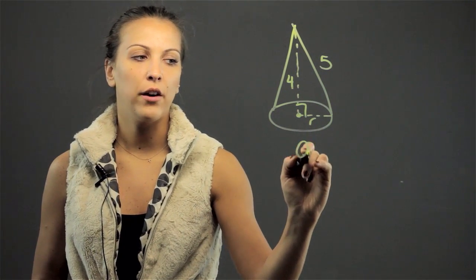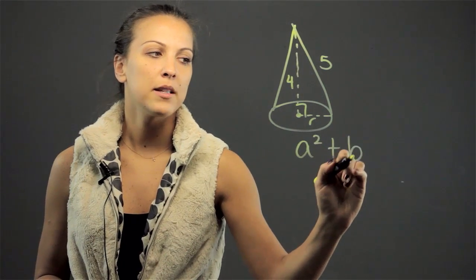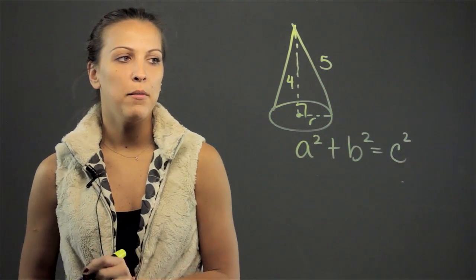So that means that I can use the Pythagorean theorem. So I'm going to use a squared plus b squared equals c squared, and that's going to help me find the radius.